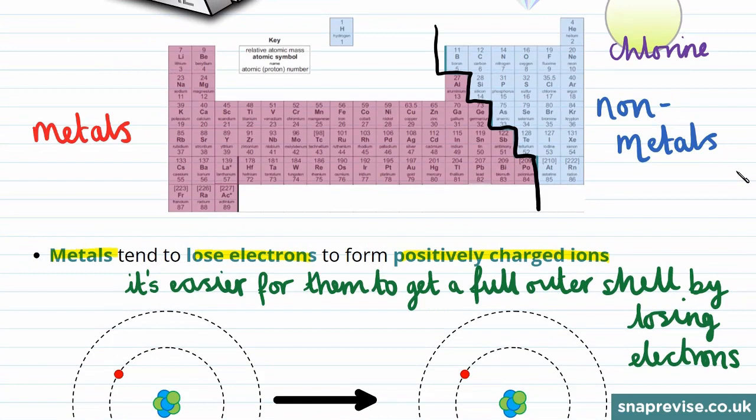And again, this is because metals are on the left-hand side of the periodic table and therefore tend to have outer electron shells that are far from being full.